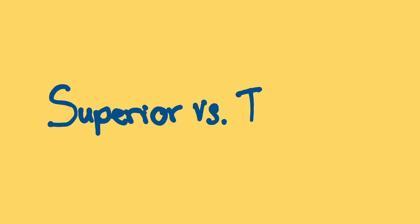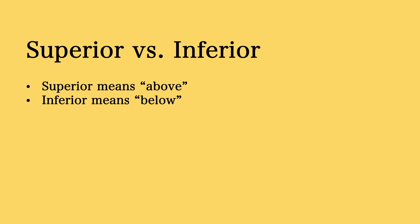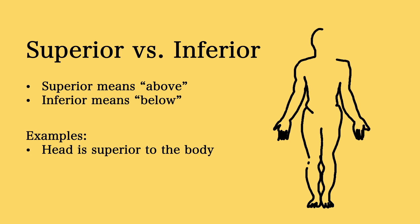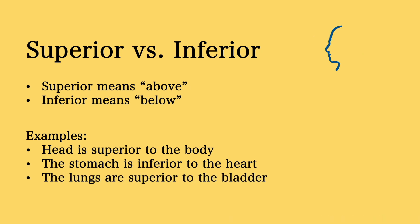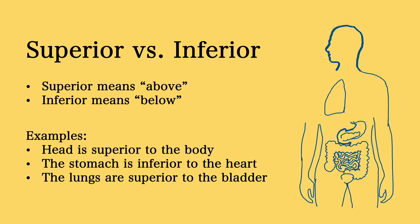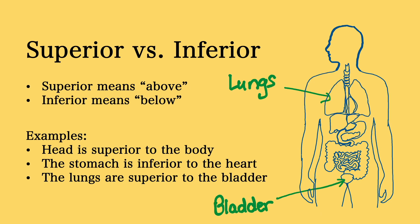Now let's learn about the key terminologies that will help you during your anatomy lessons. Firstly, we have superior and inferior. Superior means above and inferior means below. For example, the head is superior to the body, the stomach is inferior to the heart, and the lungs are superior to the bladder.